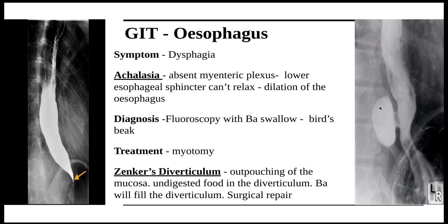Zenker's diverticulum is the outpouching of the mucosa, so all the undigested food accumulates in this outpouching. When you do a fluoroscopy with barium swallow, you can see the accumulation of barium in the outpouching, and that's how it is diagnosed. It is treated with surgical repair.